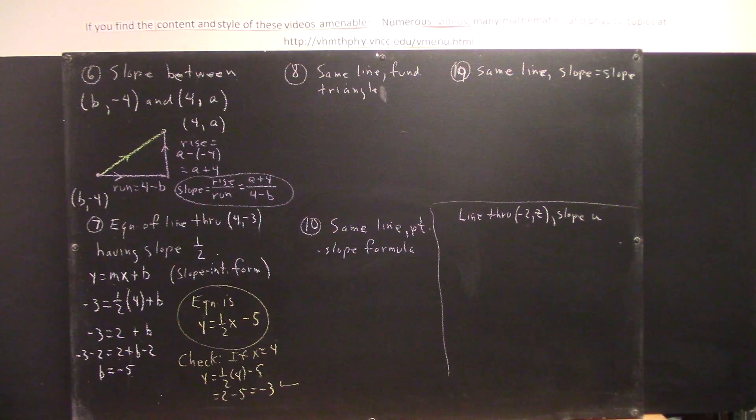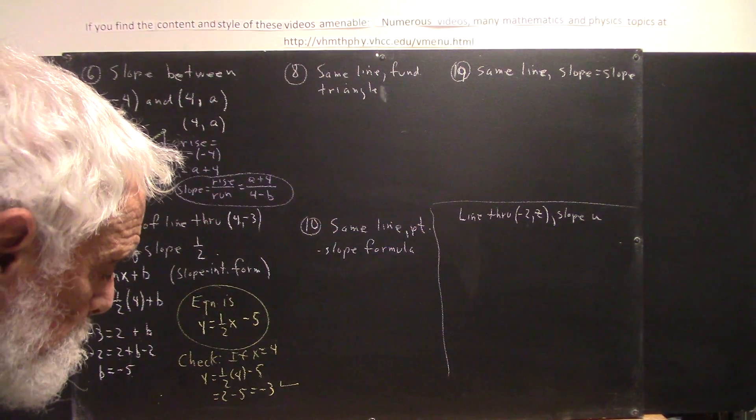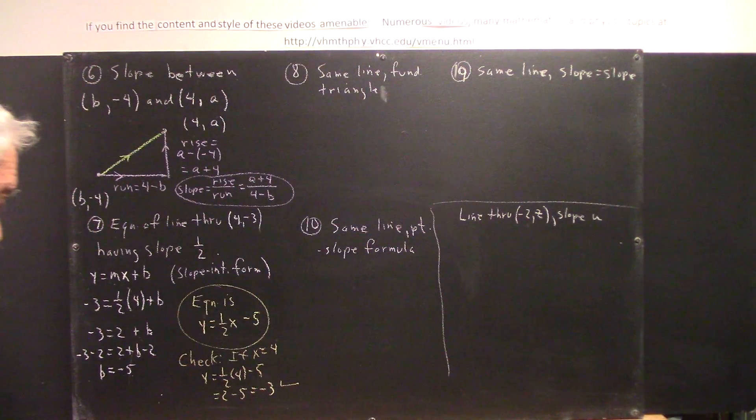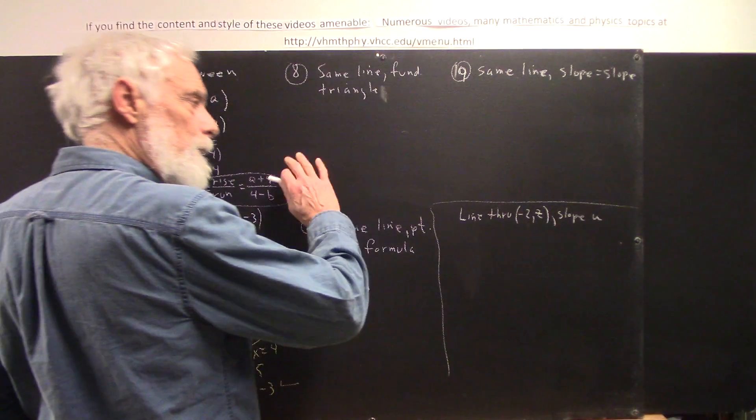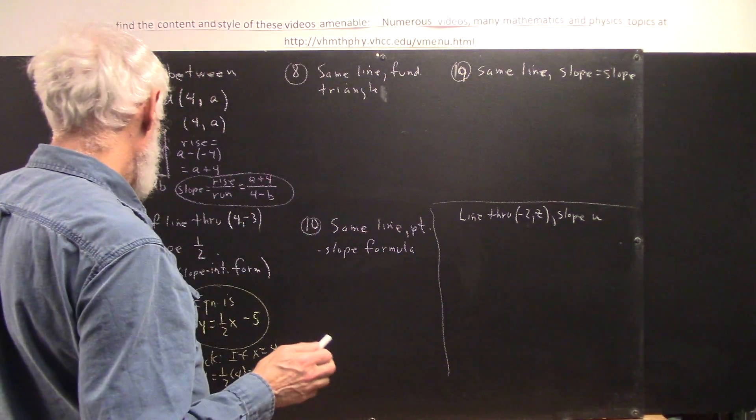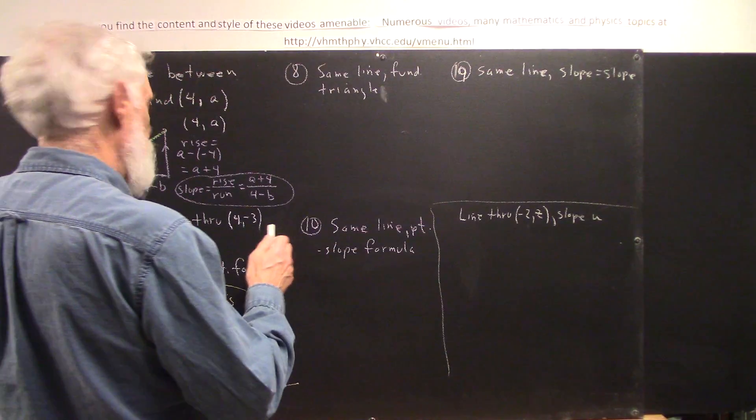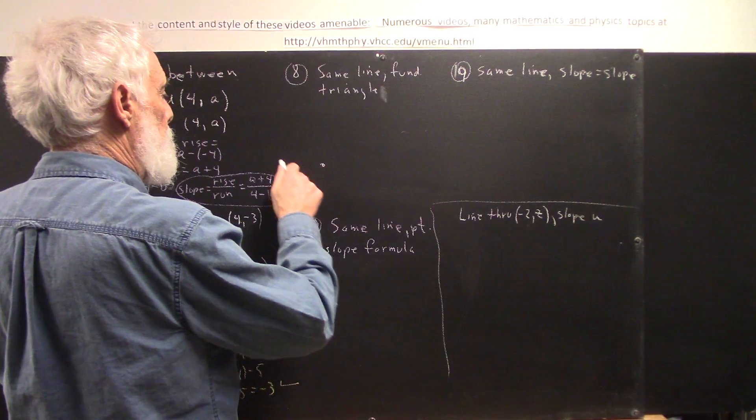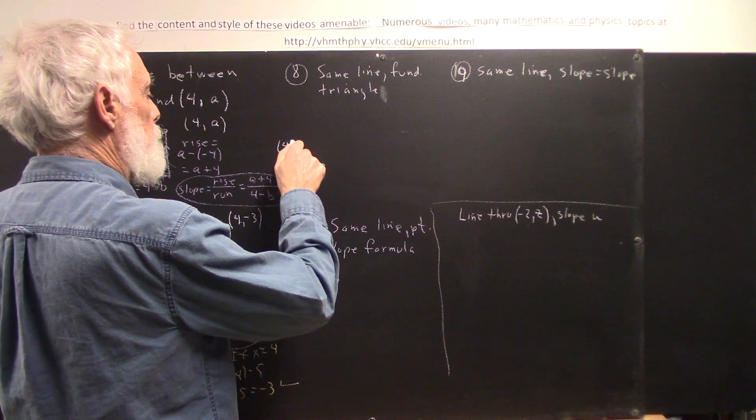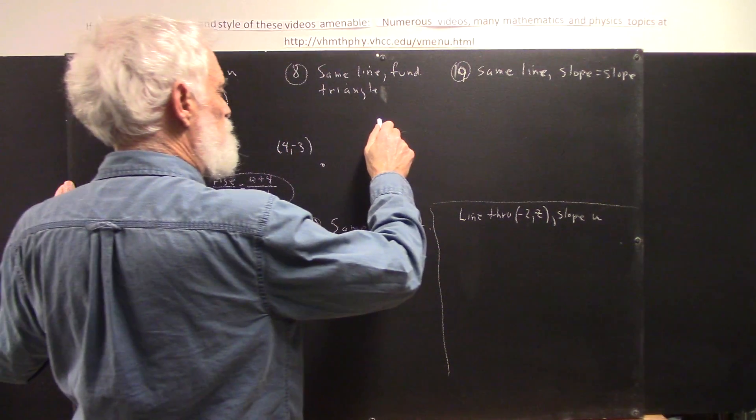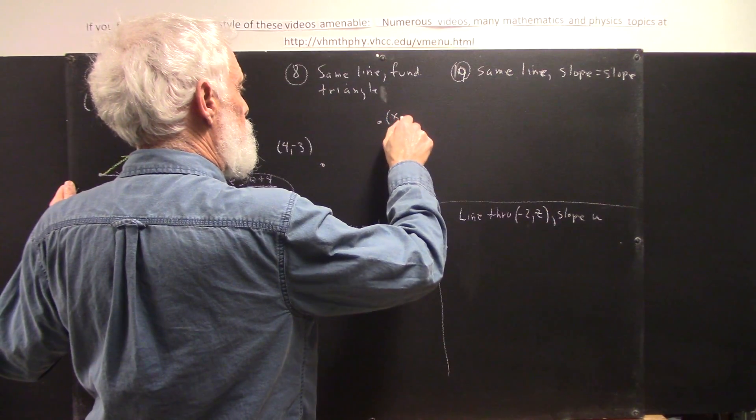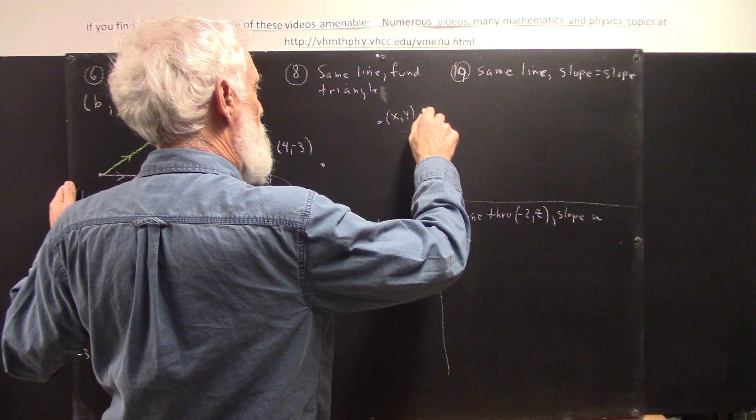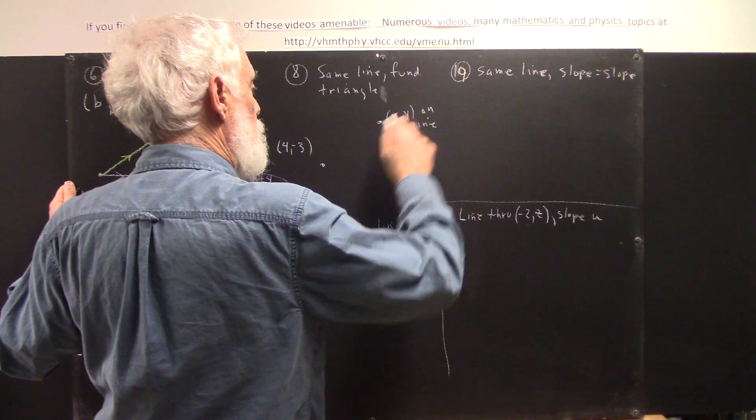Now we're going to find the same line, but we're going to use a fundamental triangle. And the logic of this is a little more subtle than just plugging numbers into a formula, but I consider this to be important for understanding the equation of a line. So what we know is the line has the point 4, negative 3. Now let x, y be any point on the line.